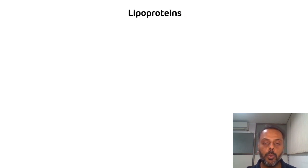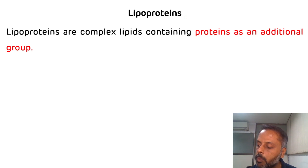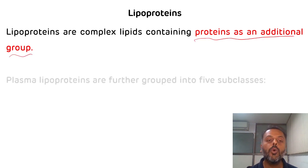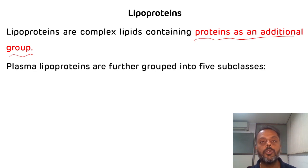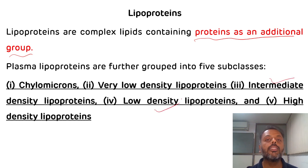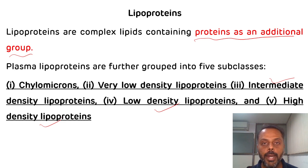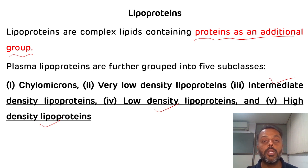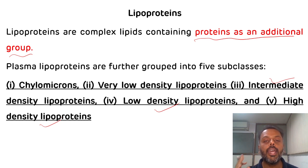The third complex lipid is lipoprotein. As the name suggests, they contain protein as an additional group. Plasma lipoproteins are classified into five subclasses: very low density lipoprotein (VLDL), chylomicrons, intermediate density lipoprotein (IDL), low density lipoprotein (LDL — also known as bad cholesterol), and high density lipoprotein (HDL — also known as good cholesterol).